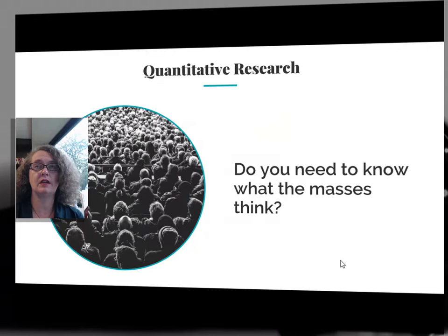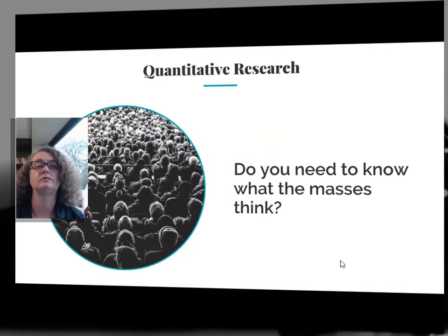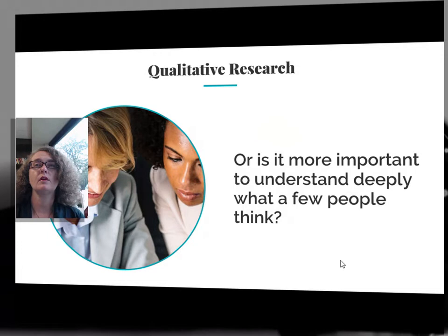The result will be narrow data about a broad population, or usually some segment of that population. By using the word narrow, I don't mean to devalue that data — I am simply saying it will be narrowly circumscribed around a particular question, such as what is the most likely outcome of the next election. By contrast, if you need to collect deeper data about a smaller number of people, then it makes sense to use qualitative methods. By using the word deeper, I'm not making a value judgment — I'm just talking about data of a different nature.